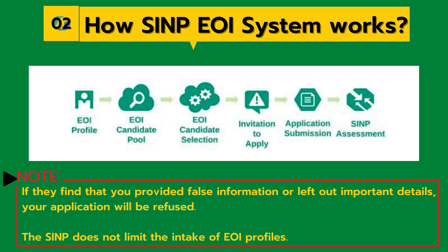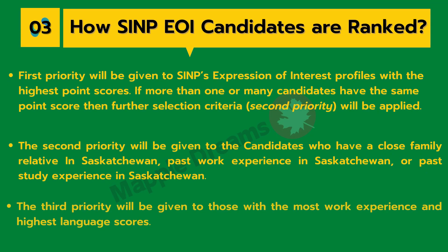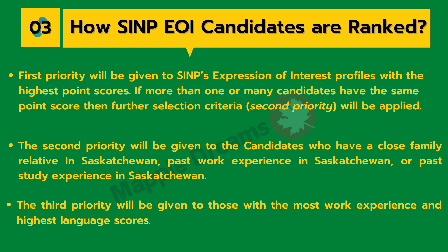Please note: if they find you have provided any false information or left out important details, your application will be refused. Regarding how SINP EOI candidates are ranked — the first priority is given to the profile with the highest point score. If more than one candidate has the same score, the second priority will be applied: candidates who have a close family relative in Saskatchewan, past work experience in Saskatchewan, or past study experience in Saskatchewan.